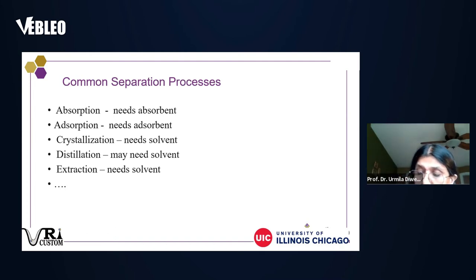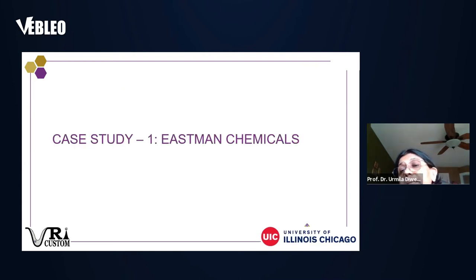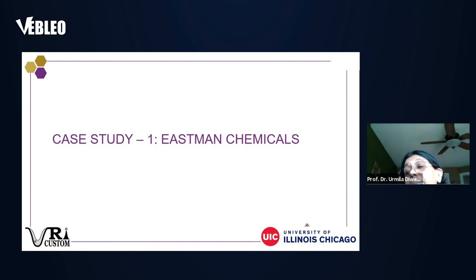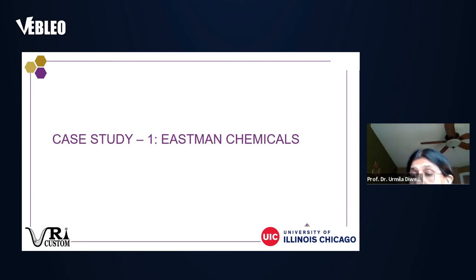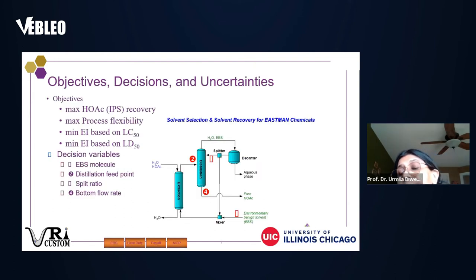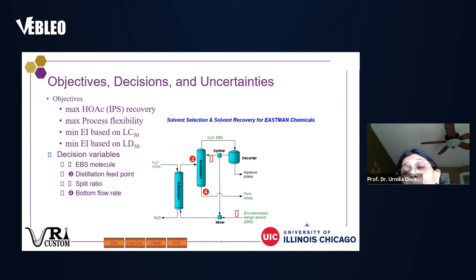The first example comes from Eastman Chemical. Their processes were generating acetic acid and water, and they didn't want acetic acid in their wastewater. They designed a process using distillation and extraction: a solvent separates water from acetic acid, and the solvent is then recovered by distillation — two steps: solvent selection and solvent recycling.